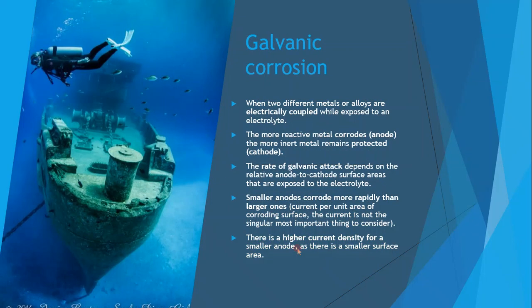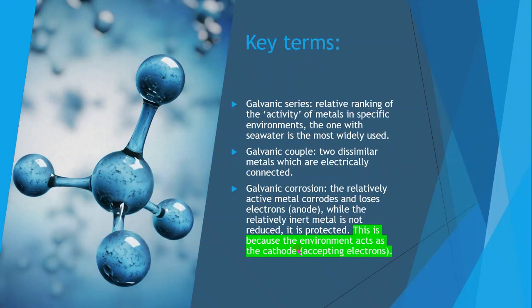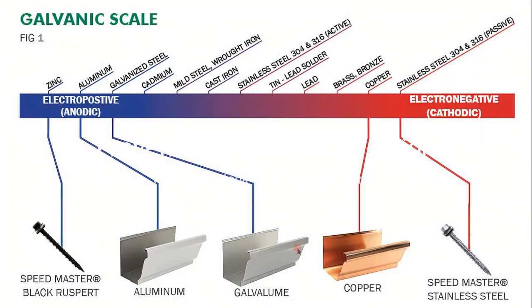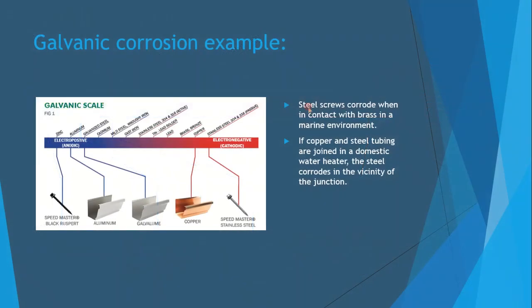Key terms include the galvanic series — a relative ranking of metal activity in specific environments, most widely used with seawater. A galvanic couple refers to two dissimilar metals electrically connected. The relatively active metal corrodes and loses electrons as the anode, while the inert metal is protected as the cathode. For example, steel screws corrode in contact with brass in a marine environment, and steel tubing corrodes at junctions with copper in domestic water heaters.